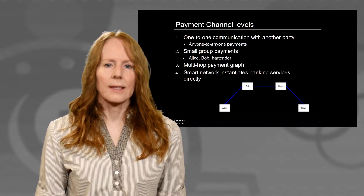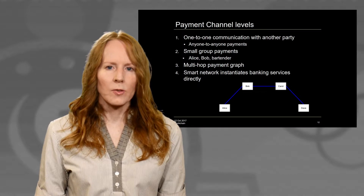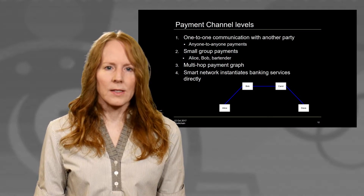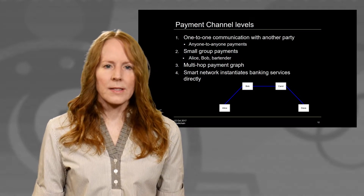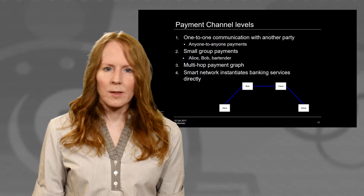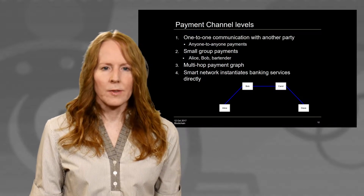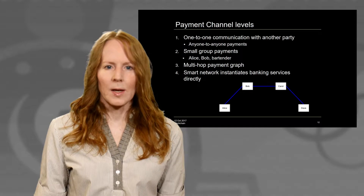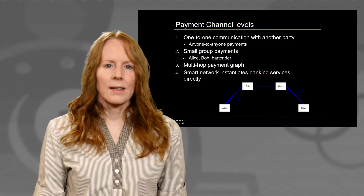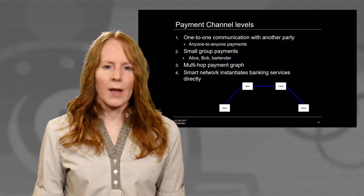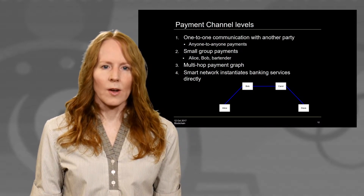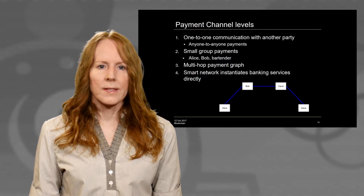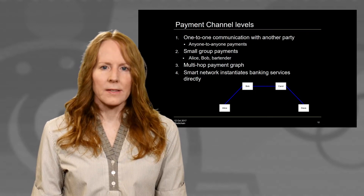The second level could be small group payments, where we have three different parties — myself and the bartender, my friend and the bartender, my friend and I playing pool together — as an example that's been used. Instead of having each of us settle unilaterally at the end of the night, we all settle on a net basis.